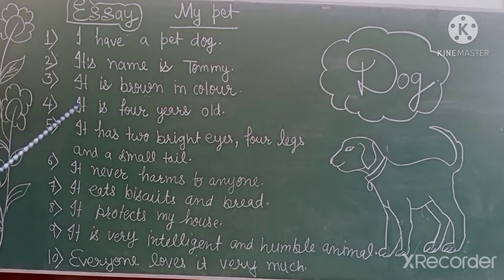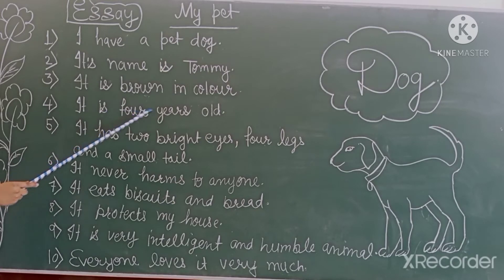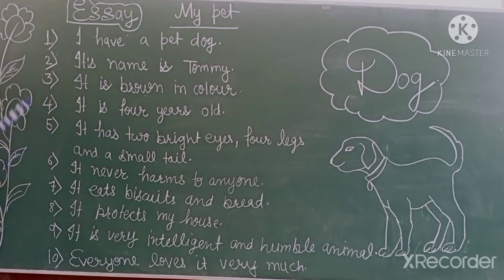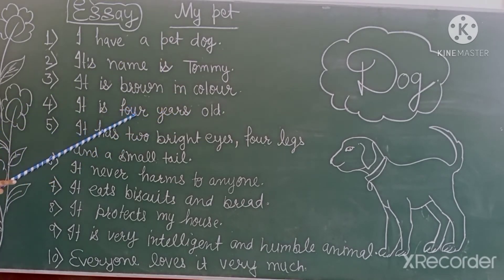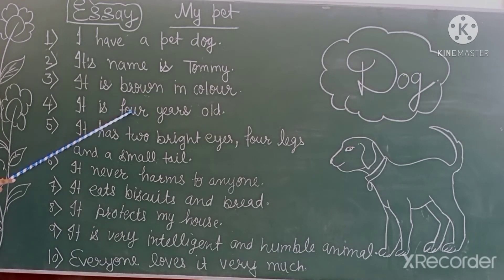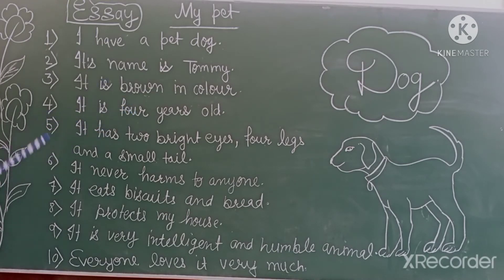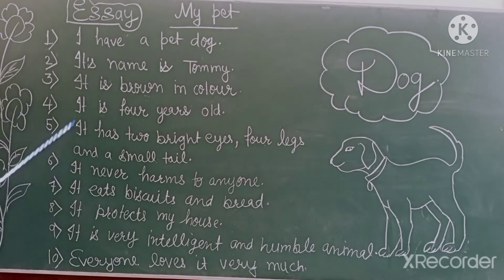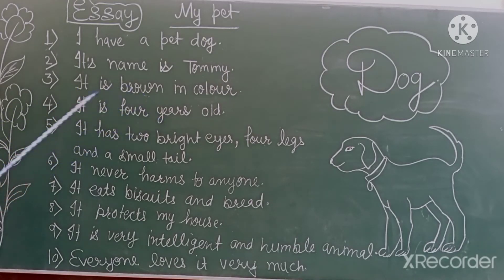Next is: It is 4 years old. Yee kitnye saal ka hai? Yee 4 saal ka hai. So yee dog 4 saal ka hai.